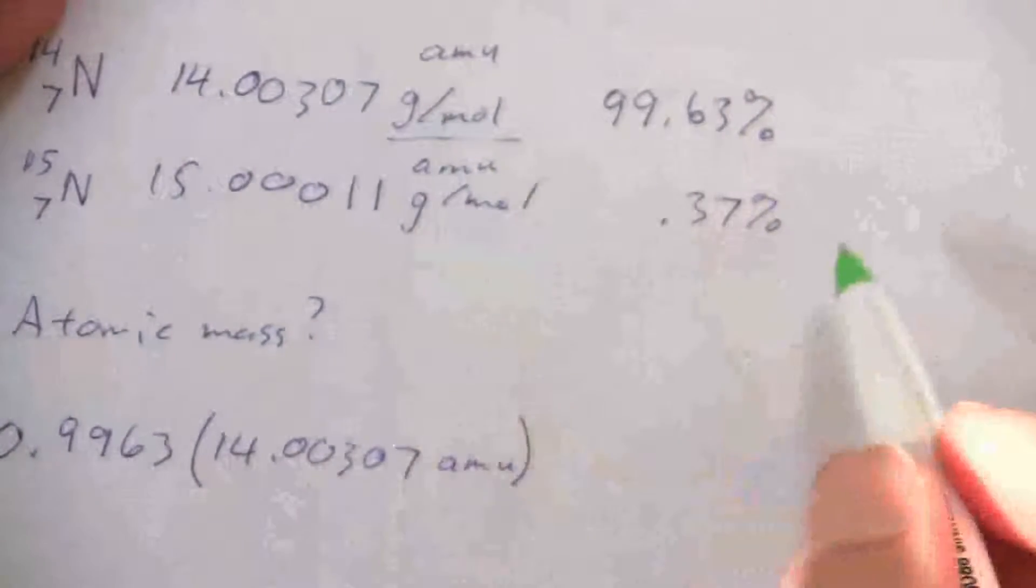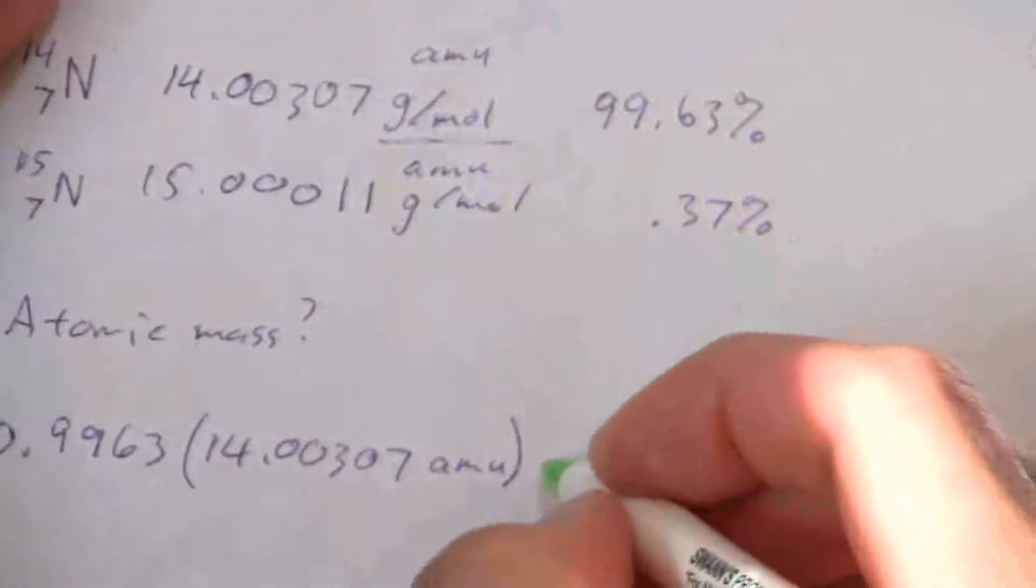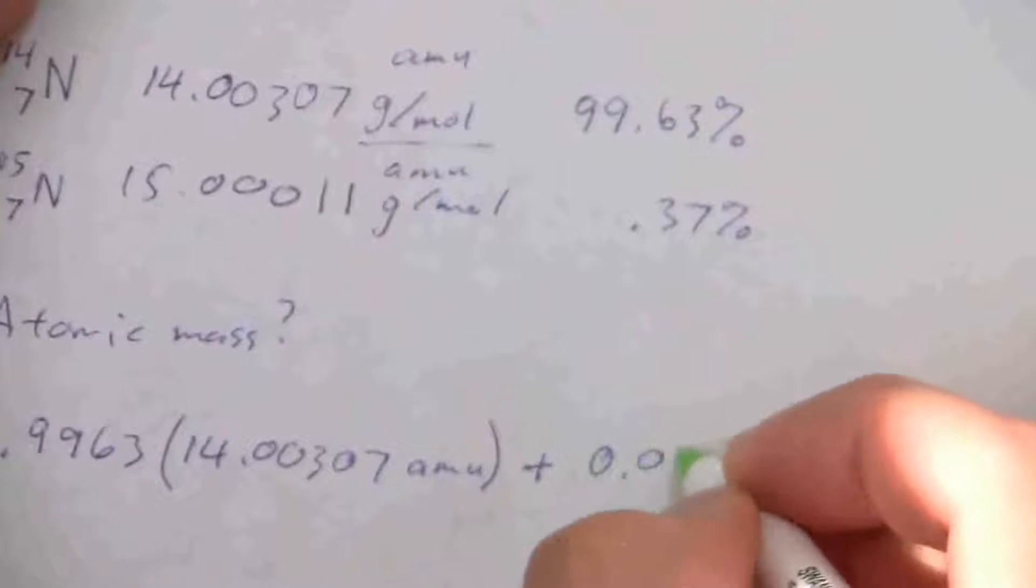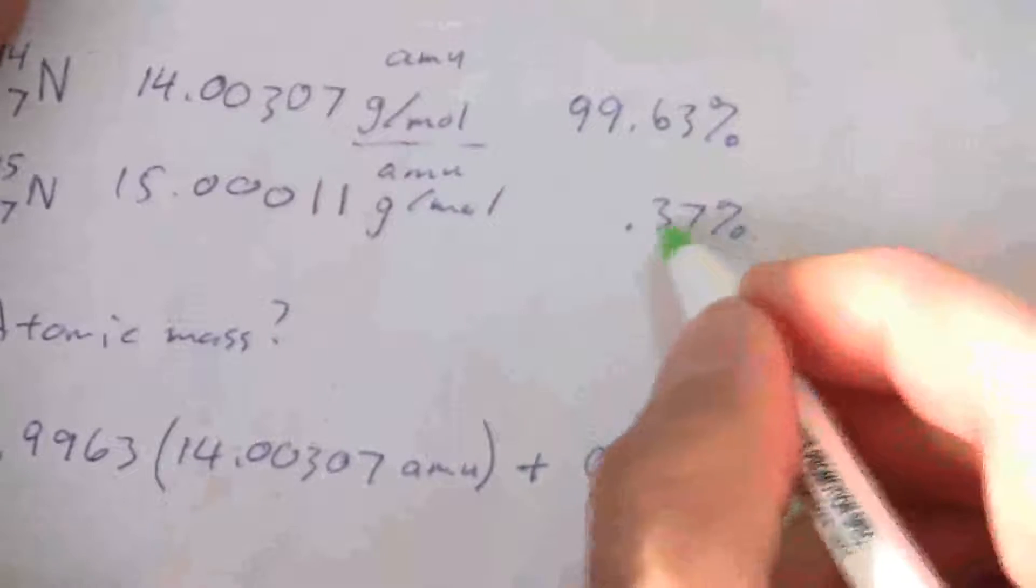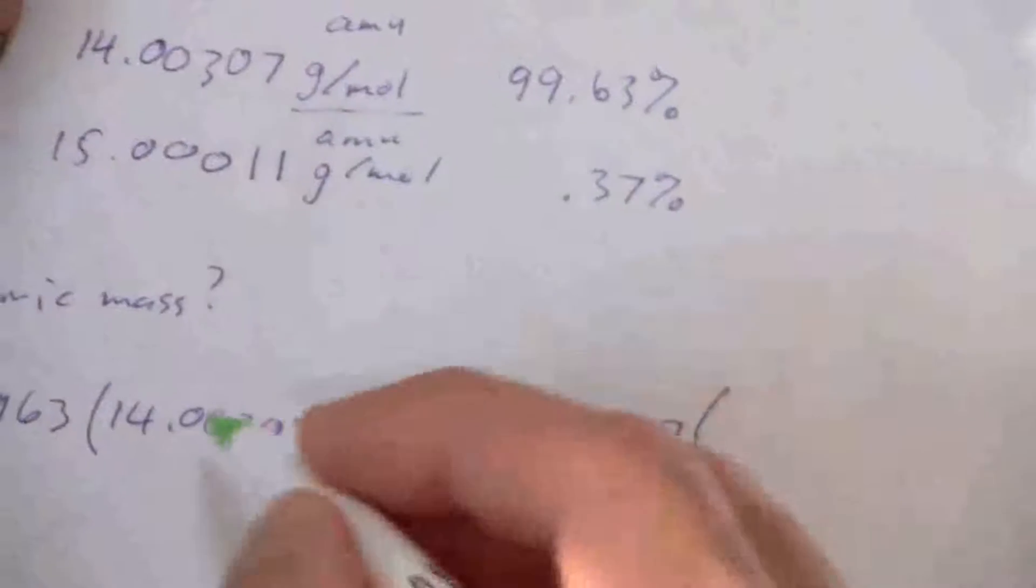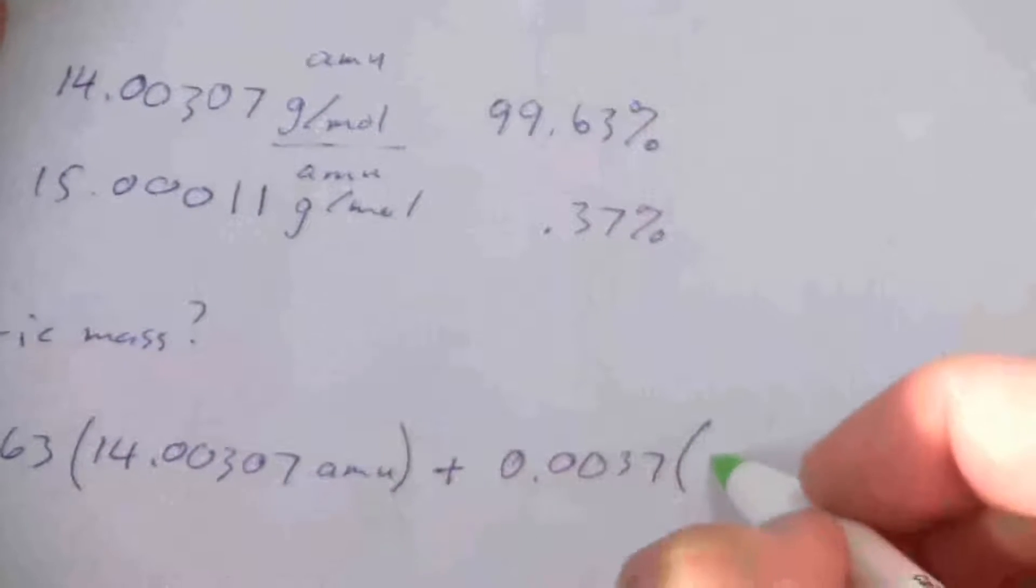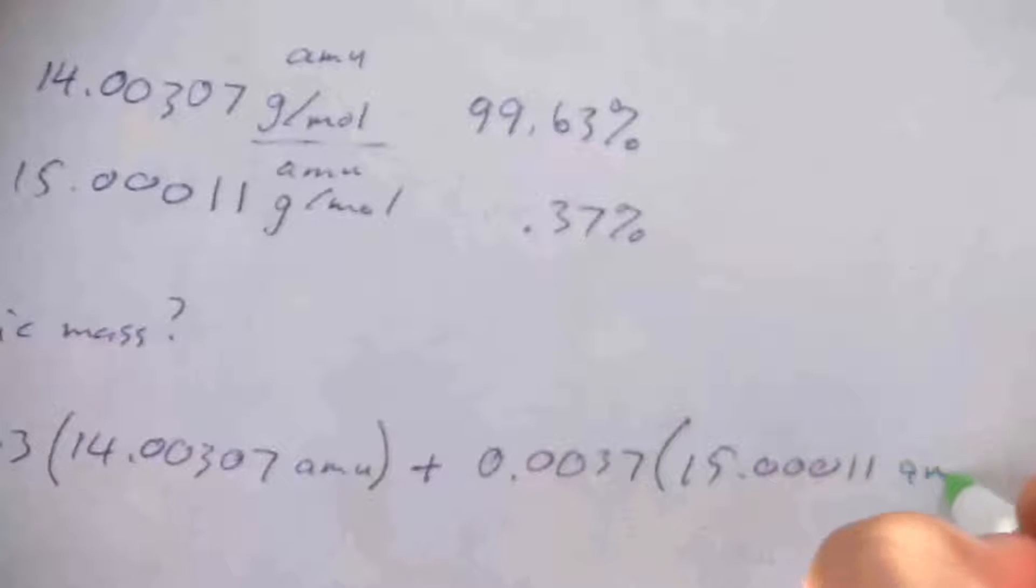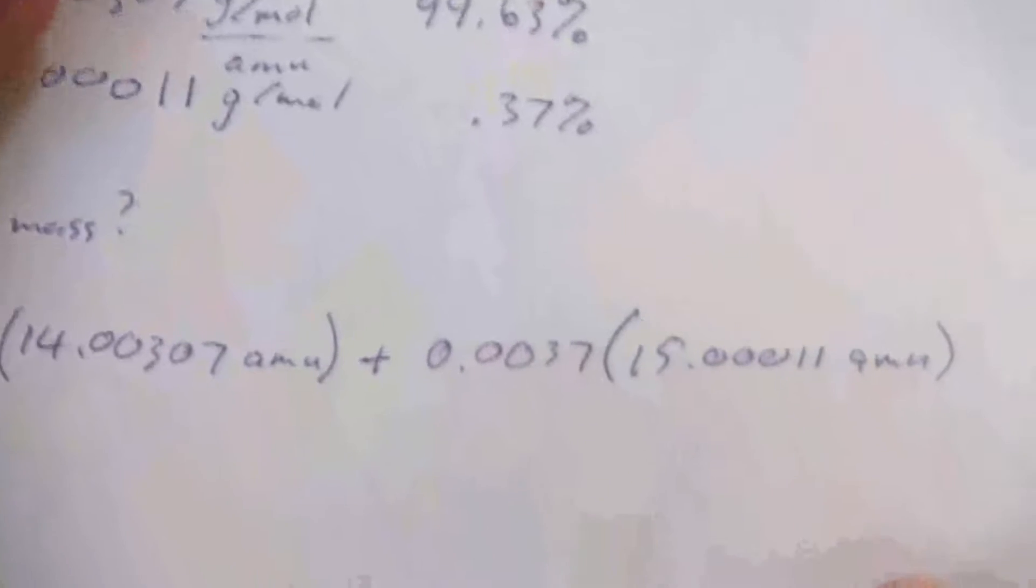Now, what about the weight of the second one? I do the same thing there, plus its weight of 0.0037. Remember, I'm expressing this as a decimal, so I divide by 100 times its mass, which is 15.00011 AMU.